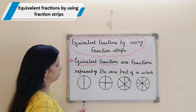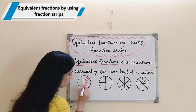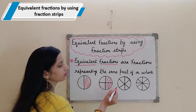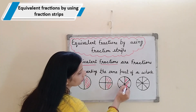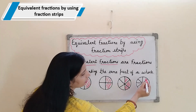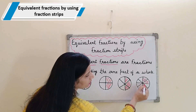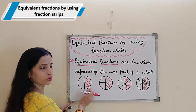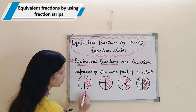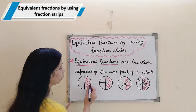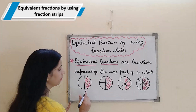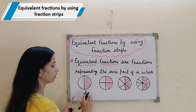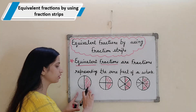Now I am shading these circles. Here I am shading only 1 part. Here, 2 parts. Here, 3 parts. And here, 4 parts. So first we will write the value of the shaded portion in the whole. This represents half or 1 by 2. Here the shaded part is 1, and this circle has been divided into 2 equal parts, so the denominator will be 2. Numerator always tells us the number of shaded parts.